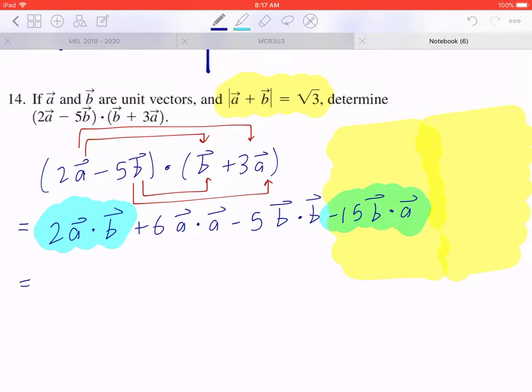So again, a · b and b · a is the same because of the commutative law. So I'm going to copy 2a · b - 15a · b.